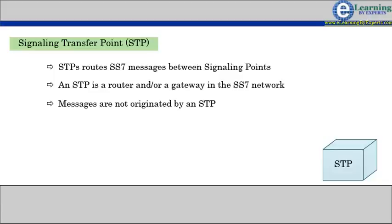Messages are not originated by an STP. If an originating SSP does not know the address of a destination SSP, the STP may perform global title translation, a procedure by which the destination signaling point is determined from digits present in the signaling message,